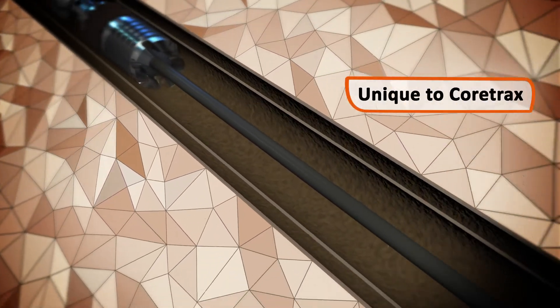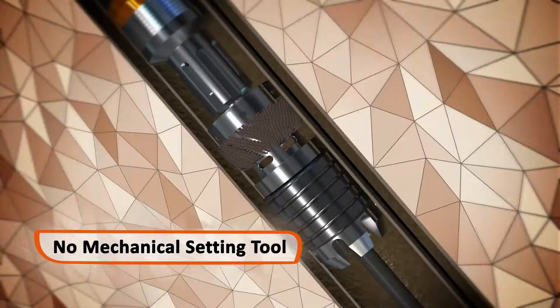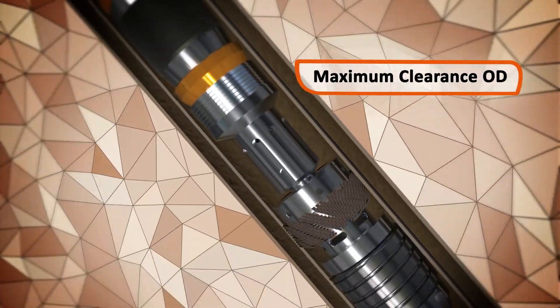Unique to Cortrax, the CX sliding valve does not require a mechanical setting tool. Maximum clearance OD prevents hang-up and preset while running in.